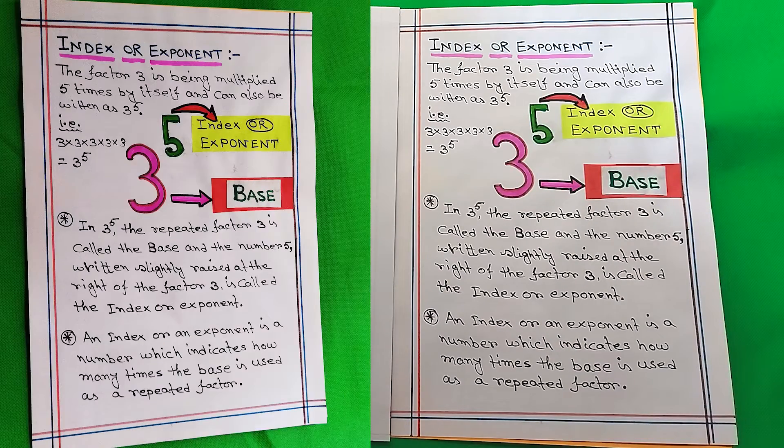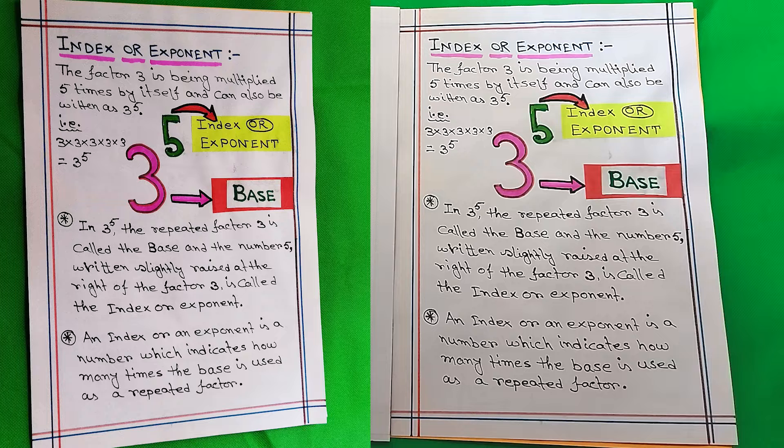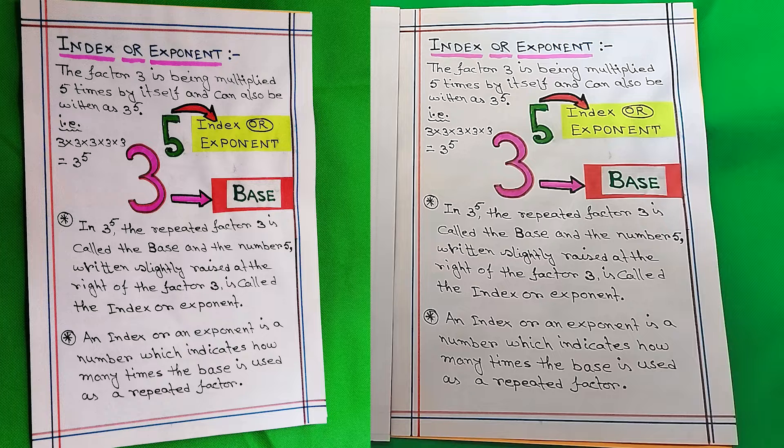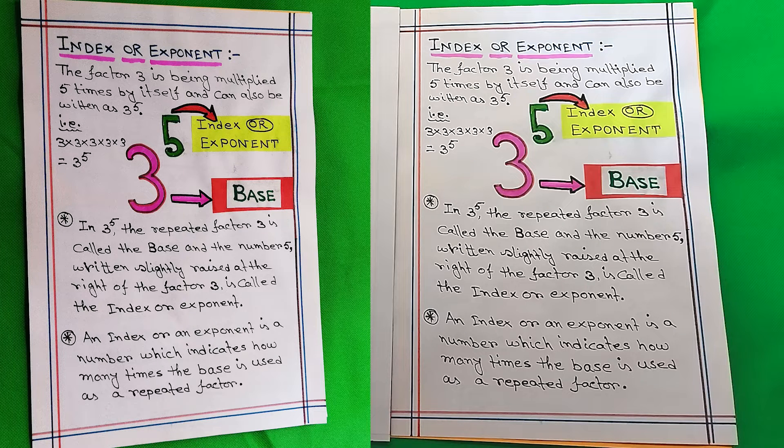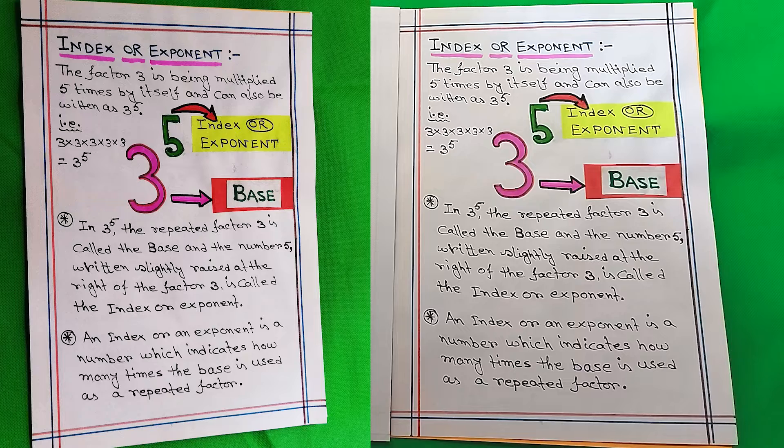Index or exponent: the factor 3 is being multiplied 5 times by itself and can also be written as 3 to the power 5. That is 3 × 3 × 3 × 3 × 3 equals 3 to the power 5. In 3 to the power 5, the 3 is the base and 5 is the index or exponent.